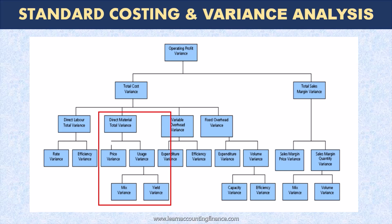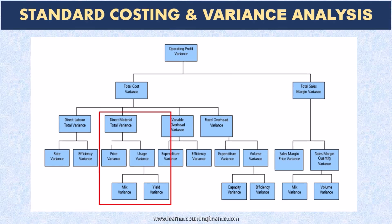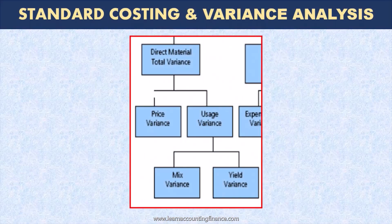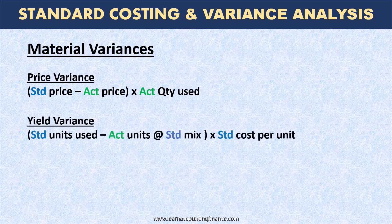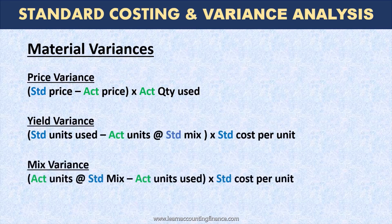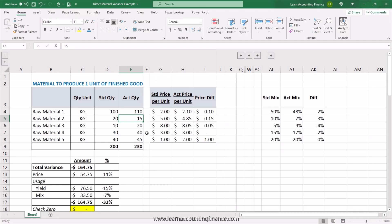In this video I'm going to show you how to calculate direct material variances in a standard costing environment. We will look at price, yield, and mix variances. We will use an Excel example to calculate all of these variances, calculate the percentage impact, and explain what each of these variances mean. Watch till the end if you are interested in knowing more about this topic.